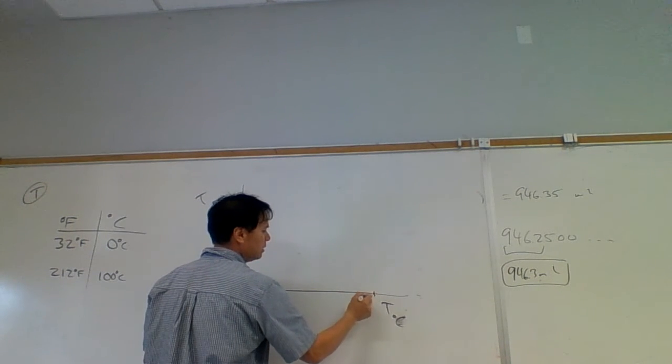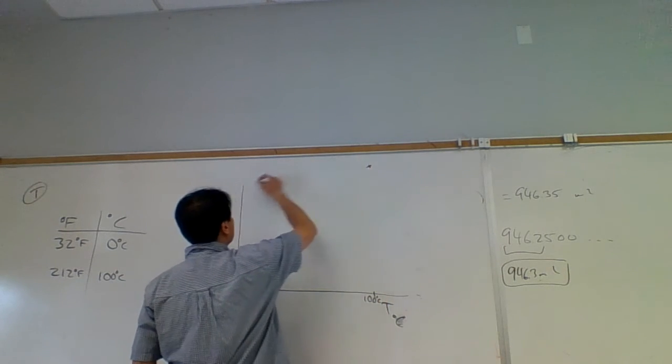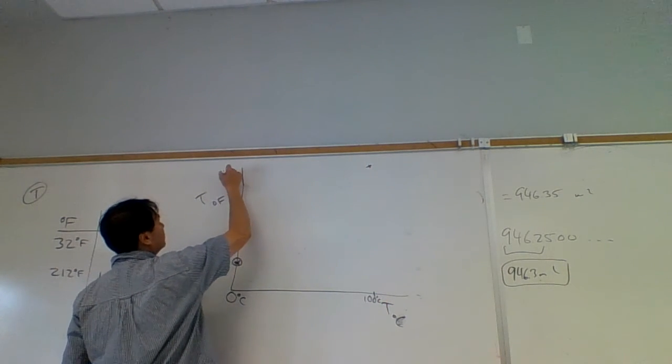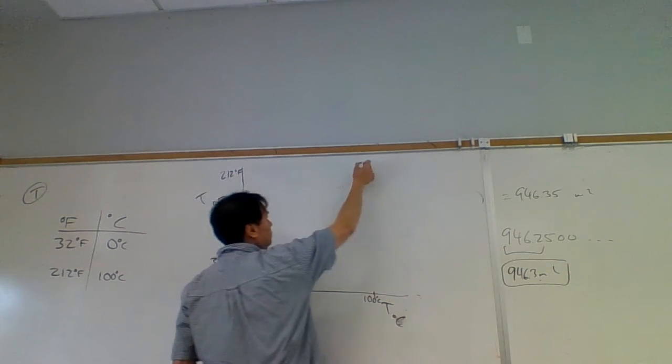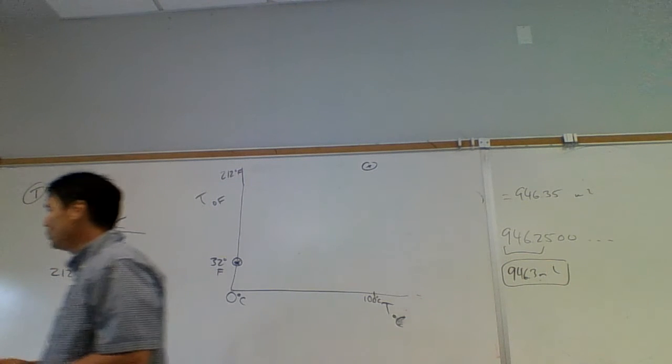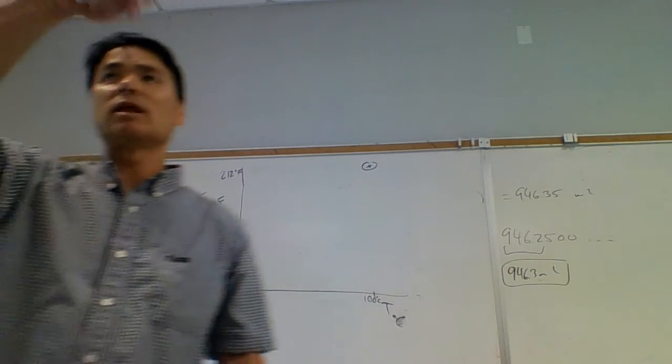If I'm at 100 degrees C, what Fahrenheit temperature am I at? I'm at 212 Fahrenheit. Here. Now two points define a straight line. How many points do you need to define a curved line?